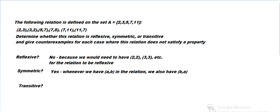How about transitive? So for it to be transitive, whenever we have (a,b) and (b,c), we also have (a,c).